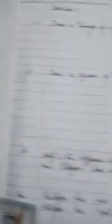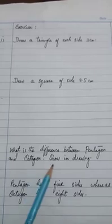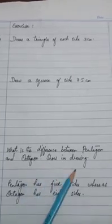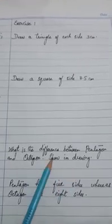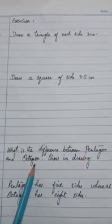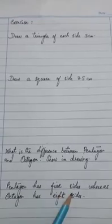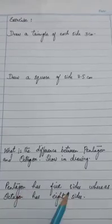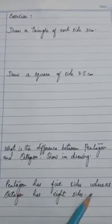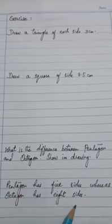The third question of the exercise is: what is the difference between a pentagon and an octagon? Show in drawing. The difference is that a pentagon has 5 sides, whereas an octagon has 8 sides.